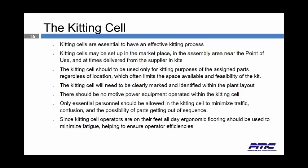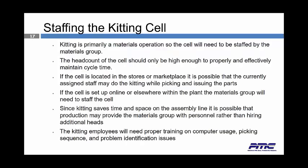Since kitting cell operators are on their feet all day, ergonomic flooring should be put in place to minimize fatigue and help ensure operator efficiency. Kitting is primarily a materials operation, so the cell will need to be staffed by the materials group. The head count should only be high enough to properly and effectively maintain the cycle time. If the cell is located in the stores or marketplace, currently assigned staff may do the kitting while picking and issuing parts. Since kitting saves time and space on the assembly line, it's possible that production may provide the materials group with personnel — transferring people from production to materials — rather than adding head count to the overall operation.